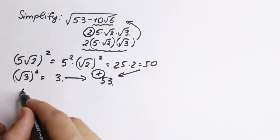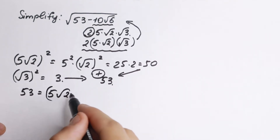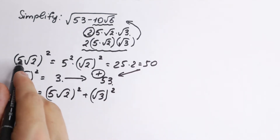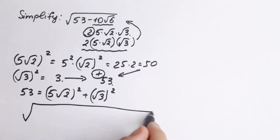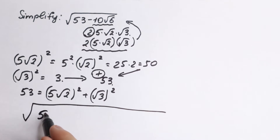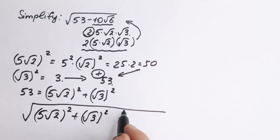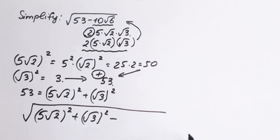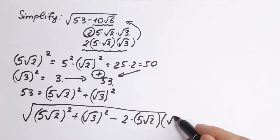So this 53 at the beginning can be expressed as (5√2)² plus (√3)². That is a perfectly valid substitution. As a result, under the square root sign we now have: (5√2)² plus (√3)² minus 2 times 5√2 times √3.